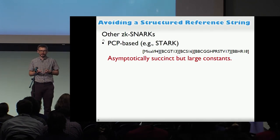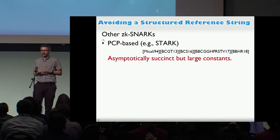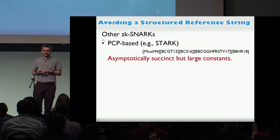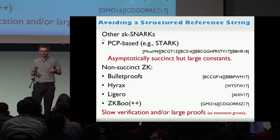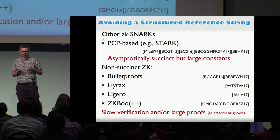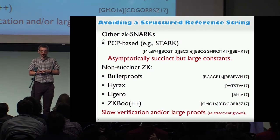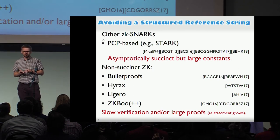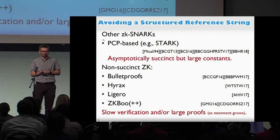STARKs are asymptotically succinct, but generally have large constants, so the proofs are much larger in practice. If your statement is sufficiently simple, you could use a non-succinct zero-knowledge proof - say Bulletproofs, or Hyrax, or Ligero, or ZKBoo. But as the statement grows, so does the verification time, and in a blockchain scenario that might be unacceptable.